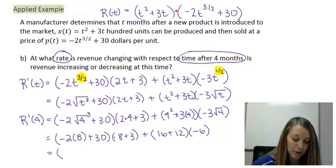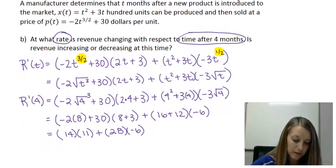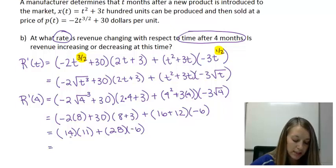Here I have -16 + 30, which simplifies to 14. 8 + 3 gives me 11. 16 + 12 gives me 28. And then just copy down the -6. So 14 times 11 gives me 154. Plus -28 times 6 gives me 168. And 154 plus negative, or 154 minus 168 gives me -14.